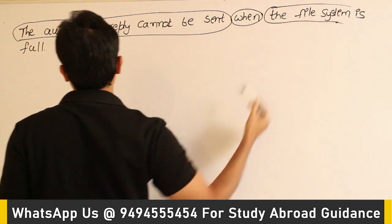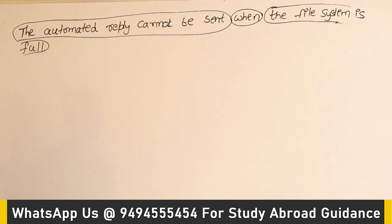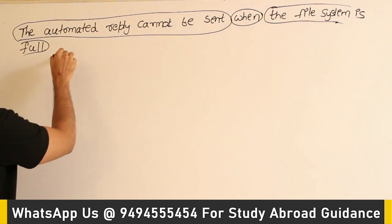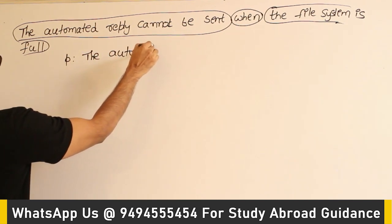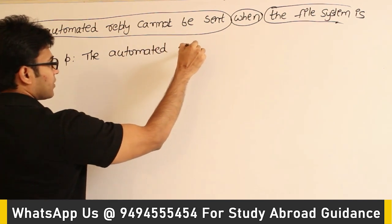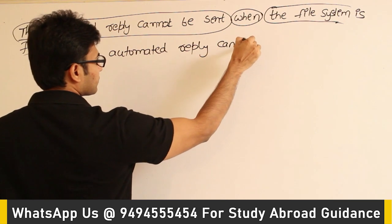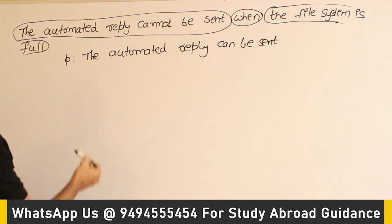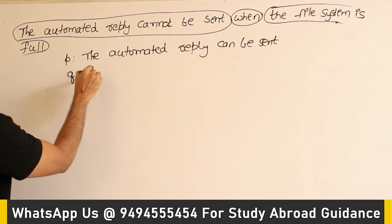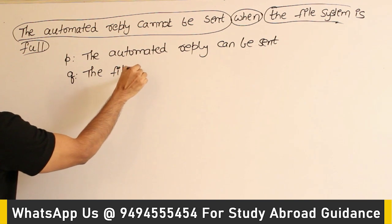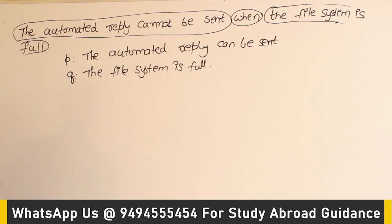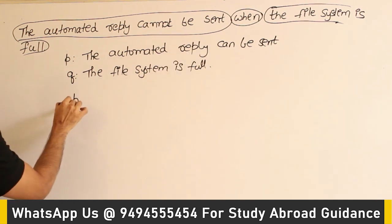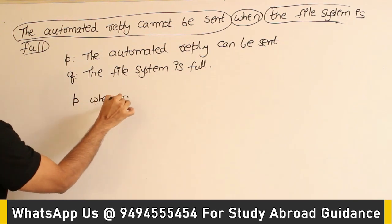The file system is full — this is the second statement. Now, let P denote 'the automated reply can be sent' and Q denote 'the file system is full.' If you observe this, it is in the form of P when Q.